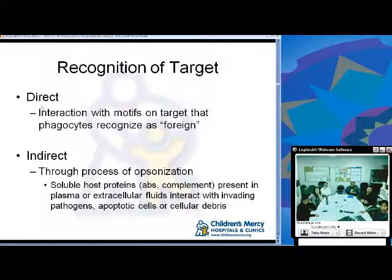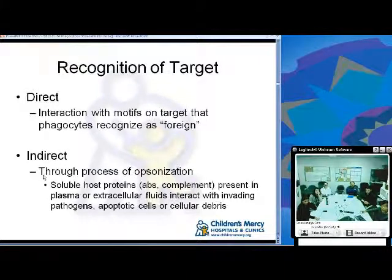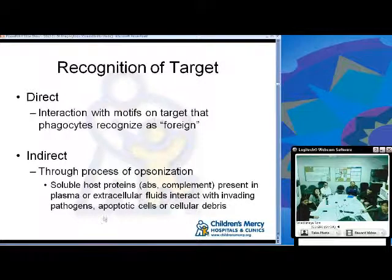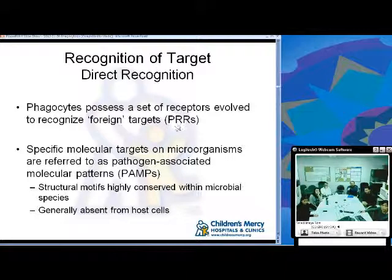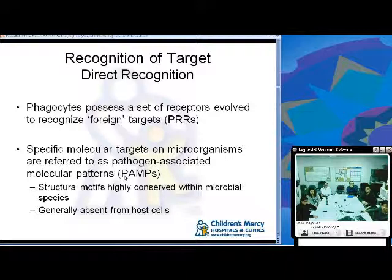There are two ways phagocytes can recognize a target. One is direct recognition, involving interaction with motifs on the target that phagocytes recognize as foreign. The other is indirect recognition through opsonization, involving soluble host proteins such as antibodies and complement present in plasma or extracellular fluids. Phagocytes possess pattern recognition receptors (PRRs), and the specific molecular targets on microorganisms are called pathogen-associated molecular patterns, or PAMPs.